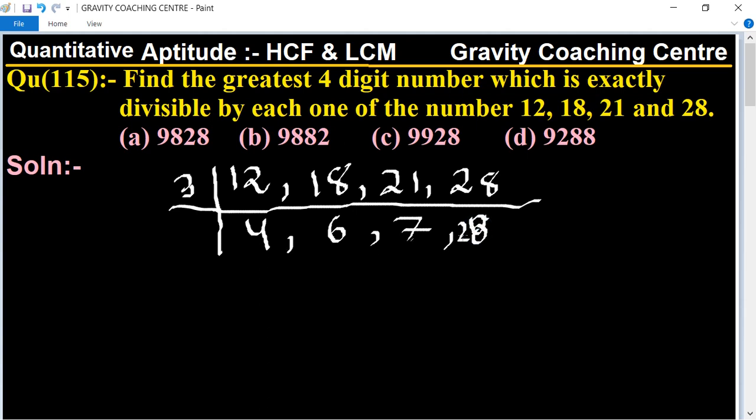And 28 is divisible by 4 and 7. So now, table of 2: 2 times 3 is 6 and 14. So therefore LCM equal to